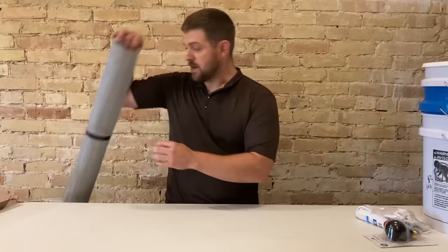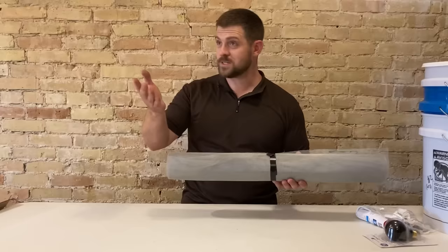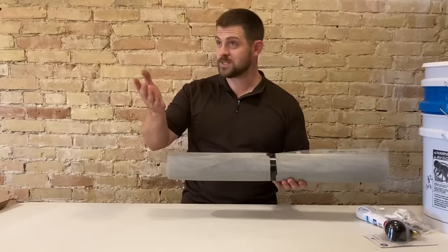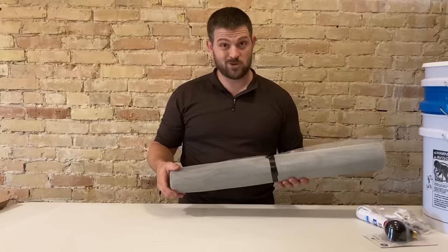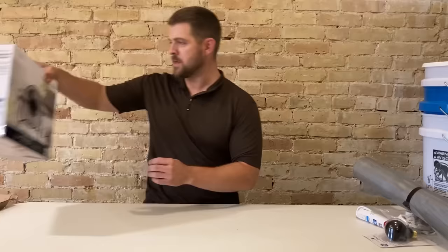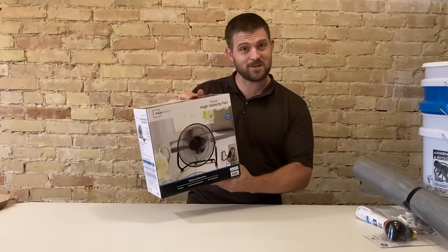Almost any hardware store is going to carry screen door mesh or the type of mesh you're going to see in the windows around your house. This happens to be aluminum. I like the aluminum over the fiberglass because I think it lasts longer and it's easier to work with. They cut it off a roll at the store so you can get just what you need. The most important piece of this project is going to be a nine-inch high-velocity fan. Now I bought this from Walmart and I bought this one specifically because it fits exactly inside one of those pails.